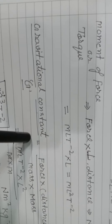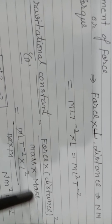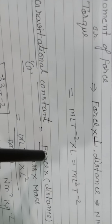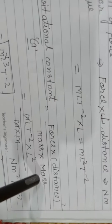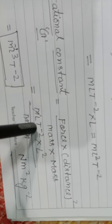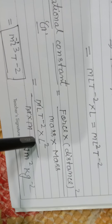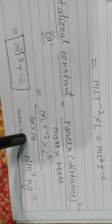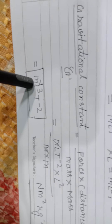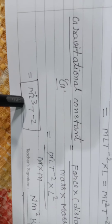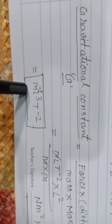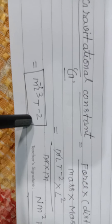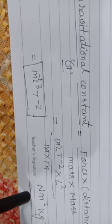For the gravitational constant G, we can write G equal to Force into distance squared divided by mass into mass. Force dimension is [MLT⁻²], distance squared is [L²], and mass squared is [M²], so after cancellation G = [M⁻¹L³T⁻²]. Its unit is Newton meter squared per kilogram squared. Thank you very much.